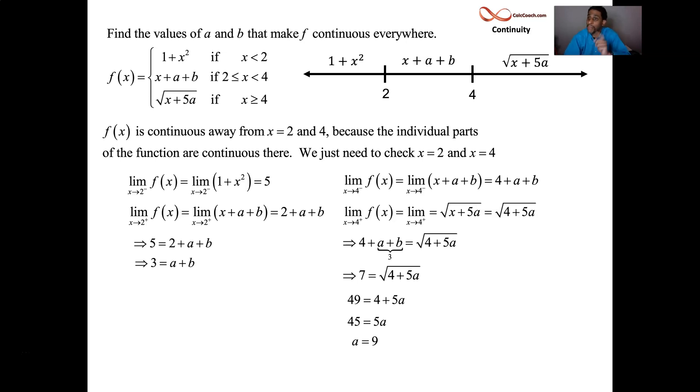And if a is 9, we can backtrack and figure out what b is. They're supposed to add up to 3. Well, that means b must be negative. b must be negative 6. All right. So a must be 9 and b must be negative 6. When they are that, you'll have the parabola meeting the line, meeting the root.